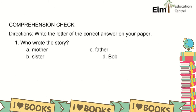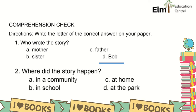So let's answer some of the questions. Write the letter of the correct answer on your paper. Since you will be writing, I will just underline the correct answers. Who wrote the story? A. Mother, B. Sister, C. Father, D. Bob. The correct answer is letter D, Bob. Number two: Where did the story happen?